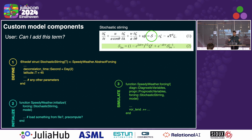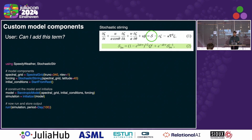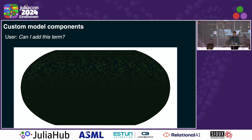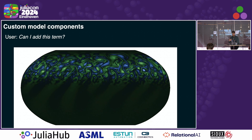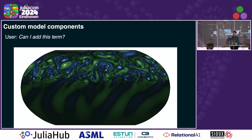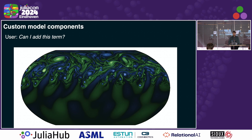It's even supposed to work across different models — you can add the same term to a different model. The way you use this is: you create the new forcing object — here I'm calling it stochastic stirring — and you just pass it to the model constructor. Whether you write a barotropic model, shallow water model, or primitive equation model, it's the same thing. And this is actually what it looks like — some stochastic forcing that starts to stir the circulation of the atmosphere in the northern hemisphere.